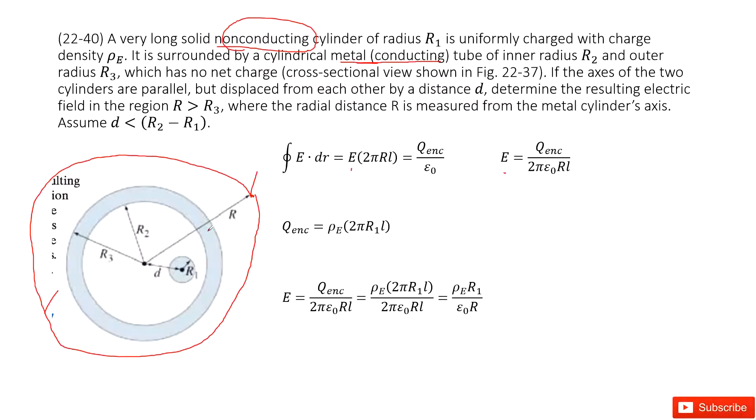Now we need to look at the enclosed charge. So this shell is no net charge. So we don't consider it. And then the charge comes from this cylindrical object R1. So use the density times the volume. We get the enclosed charge.